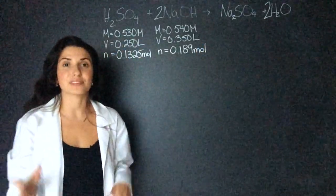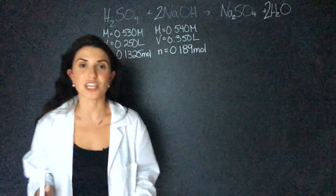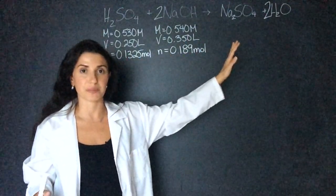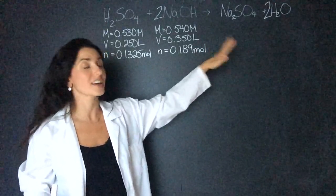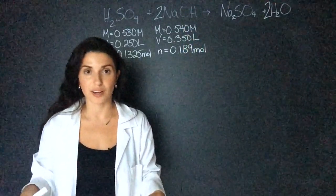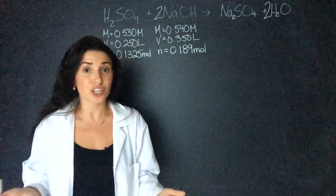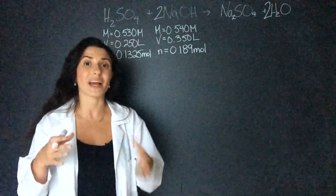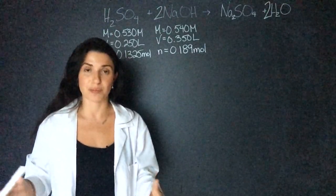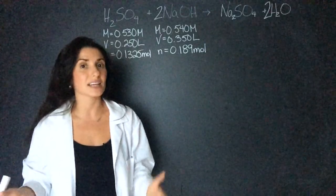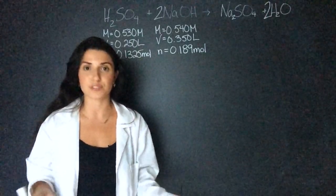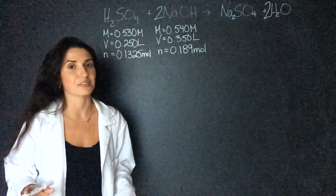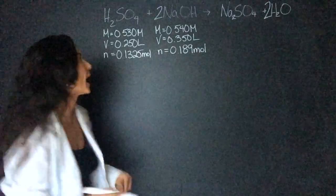Now I have to find the limiting reagent. Pretty much if this reaction got all used up I would be left with a neutral solution because I would be left with water and salt and it would be completely neutral. However we have to make sure that it will be completely used up and if it's not used up we have to figure out what is going to be the excess reagent because that excess reagent is going to tell us what the pH is in the leftover solution.